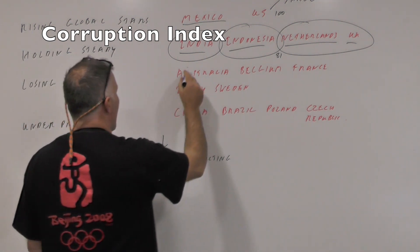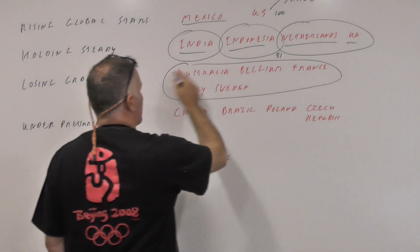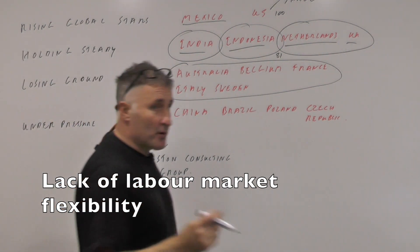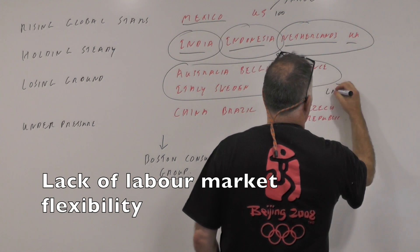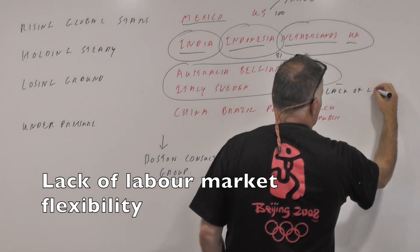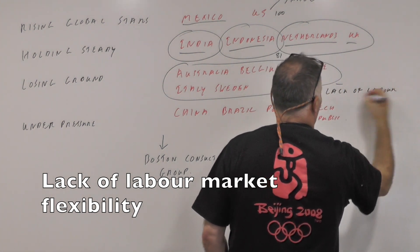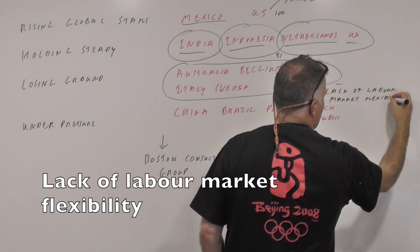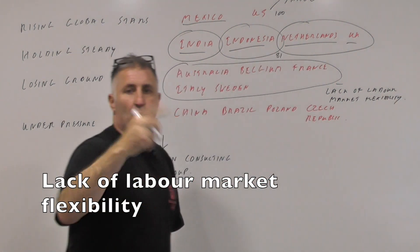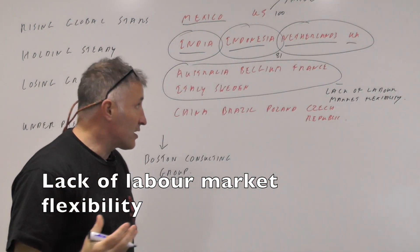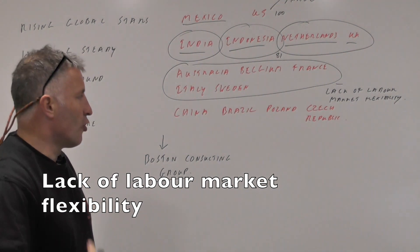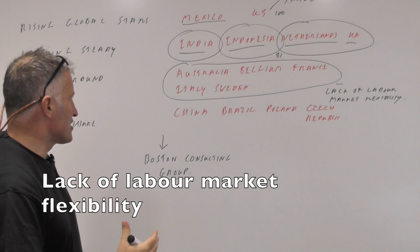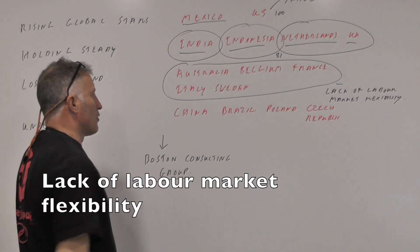Countries losing ground include Australia, Belgium, France, Italy, and Sweden. The primary reason is probably a lack of labour market flexibility — meaning workers are very expensive or not willing to move and not open to new ideas. So these countries are not doing particularly well on those factors.